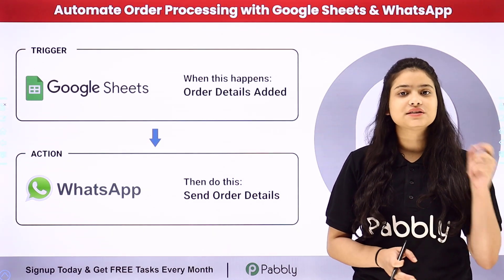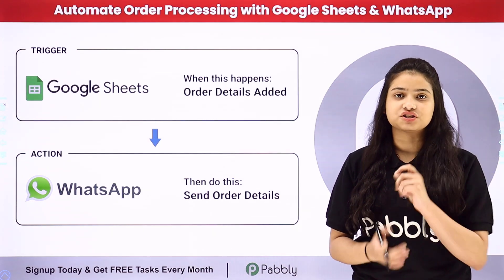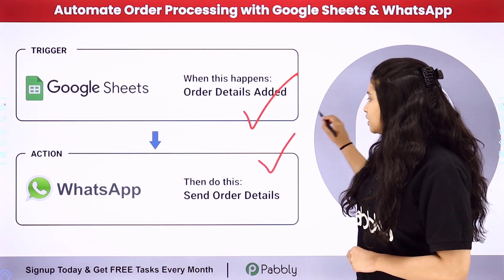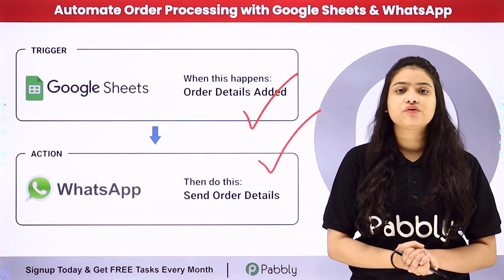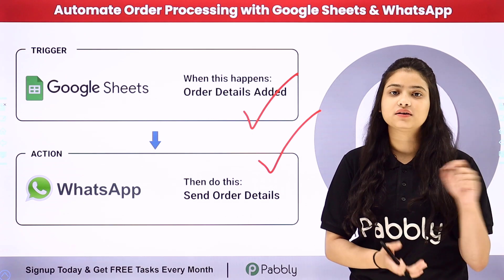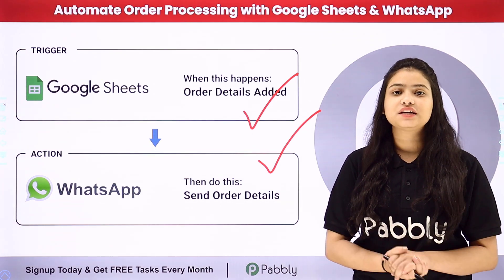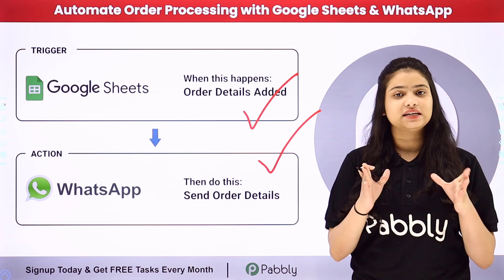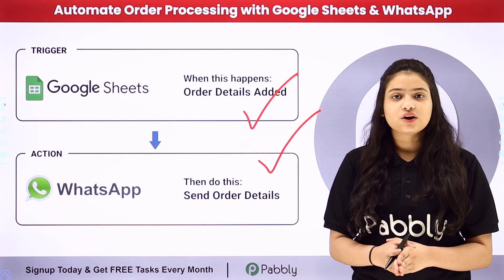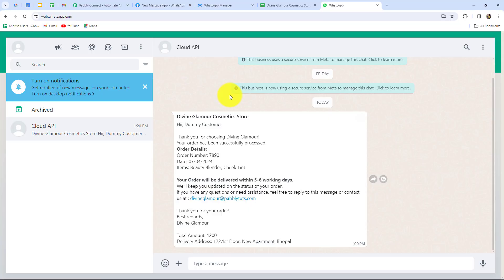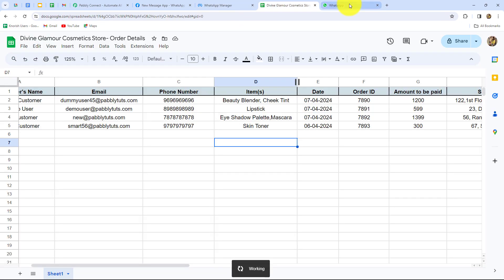Pabbly Connect works on two principles: Trigger and Action. In Trigger we are going to take Google Sheets, and in Action I am going to take WhatsApp Cloud API, with the help of which I want to send template messages to all the customers automatically. We are going to connect both of them with the help of Pabbly Connect to automate this entire process. Let me take you all to my screen where we will learn how to automate order processing with Google Sheets and WhatsApp.